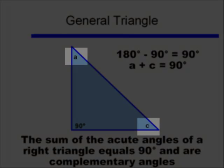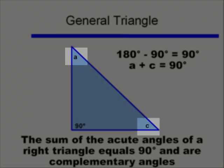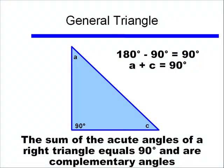So the two acute angles of this right triangle, A and C in this case, have to equal 90 degrees. So for any right triangle, the sum of the acute angles are 90 degrees. These are called complementary angles. Angles are complementary when they add up to 90 degrees.